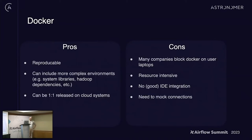With Docker, the pro is it's reproducible. You can include more complex environments like Hadoop libraries or system dependencies, and it can be one-to-one with cloud systems. But many companies, especially those in the financial world, block Docker on user machines. A lot of data engineers don't want to deal with Docker, or machines may not be powerful enough. And there's no really good IDE integration when you run Docker — some IDEs claim to have a Docker development story, but you have to see one that was actually well done.